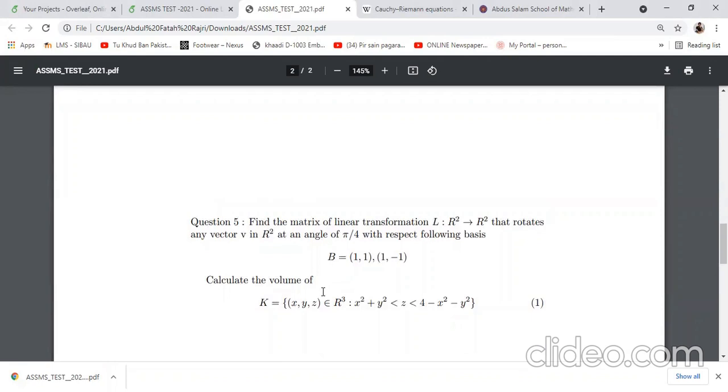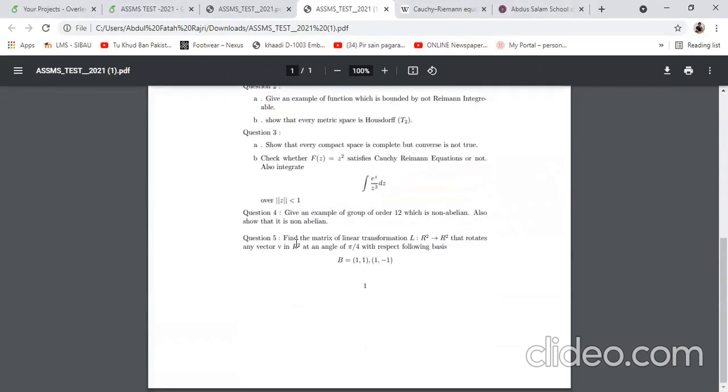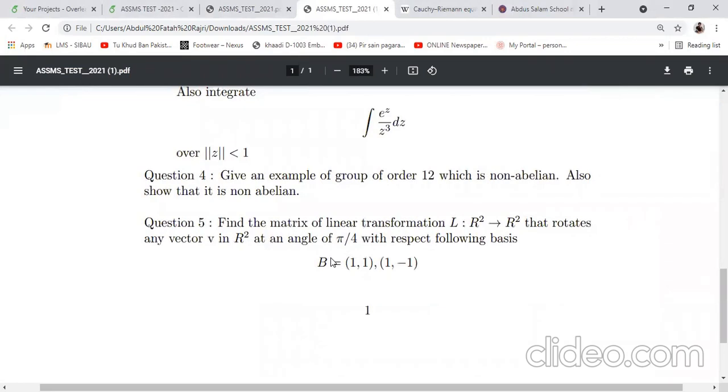Question 5: find the matrix of linear transformation R2 to R2 that rotates any vector in R2 at an angle of π/4 with respect to the following bases. For these bases, (1,1) and (1,-1), we don't know the transformation matrix, but for standard bases we know that the rotation matrix is cos θ and -sin θ in the first row, and sin θ and cos θ in the second row. From there you put π/4. This will be the matrix of linear transformation with respect to standard bases.